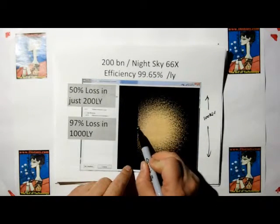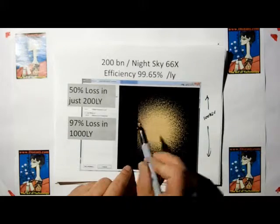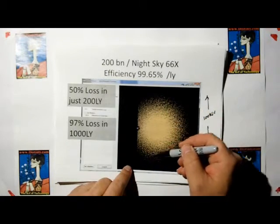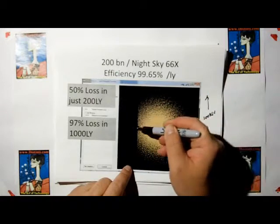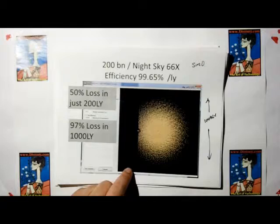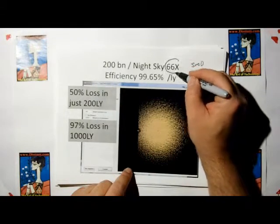This little dot here is the Earth, and I wanted to compute how bright the night sky should be given that this is the Milky Way galaxy. This is 100,000 light years, and I'm guessing about 200 billion stars. They say the estimate is between 100 and 400 billion, so I picked 200 billion stars.